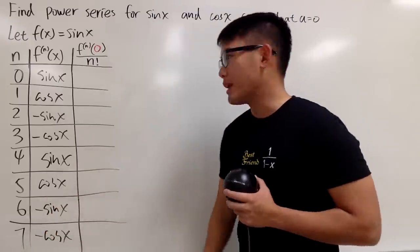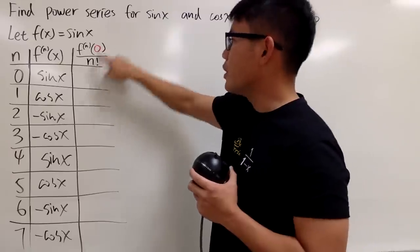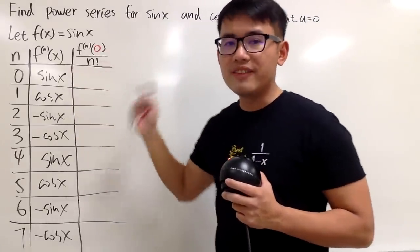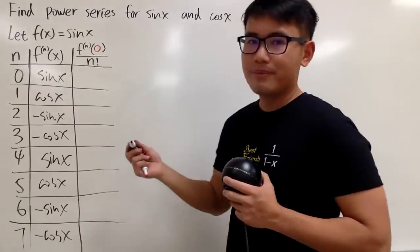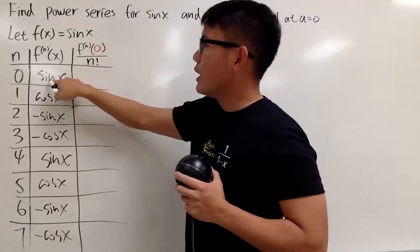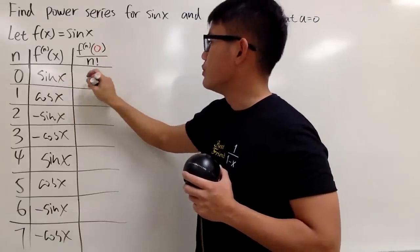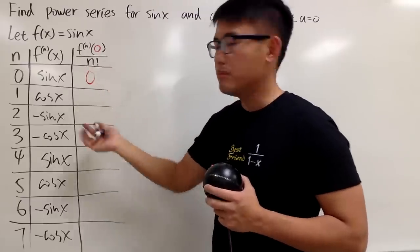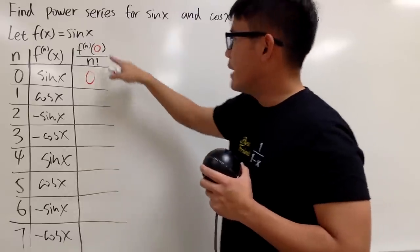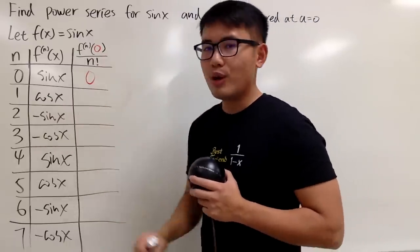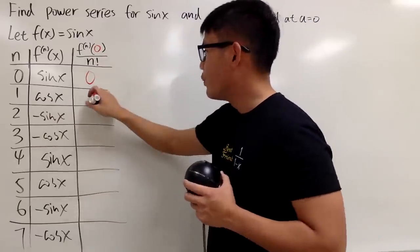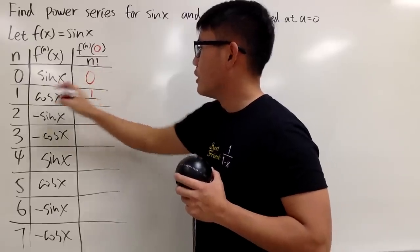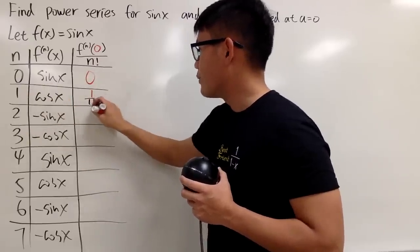Now, I will plug in zero into all the x and then calculate and divide it by the corresponding n factorial. First, when I put zero in here, we have sin 0, which is just 0, over 0 factorial. That's over 1, which is still 0. Next, I put zero here. Cos 0 is 1. So we have 1 over 1 factorial.